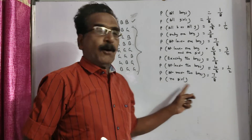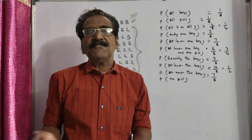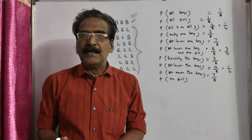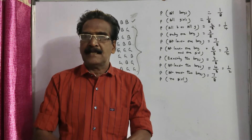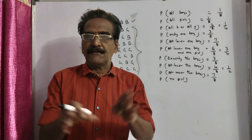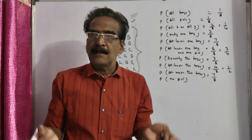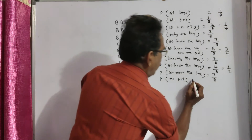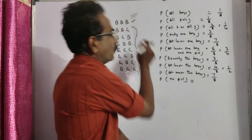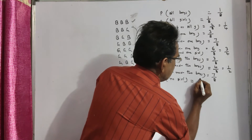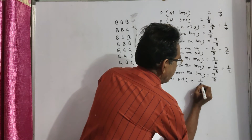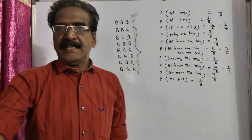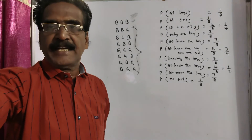Probability of no girl means probability that all are boys. All boys has only one outcome, so one by eight is the required probability. Okay friends, thank you. Have a nice day.